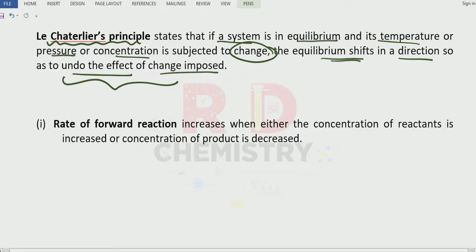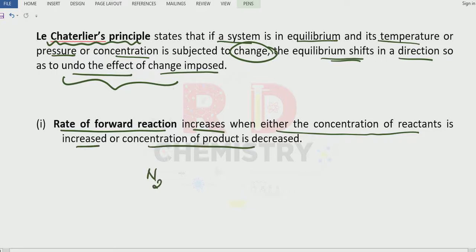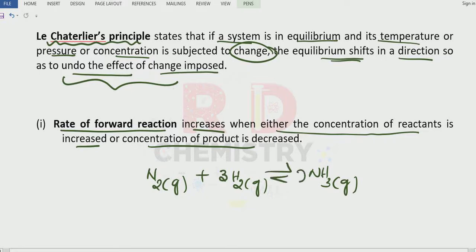See point number 1. The rate of the forward reaction increases when either the concentration of the reactants is increased or the concentration of the product is decreased. Let me take one example. Nitrogen gas reacts with 3 moles of hydrogen gas to give ammonia gas. To balance the equation, I need to have 2 moles of ammonia. Suppose I increase the concentration of nitrogen — I will add more and more nitrogen at equilibrium. Then what will happen? To decrease that concentration of nitrogen, the forward reaction proceeds. That means more products are formed.